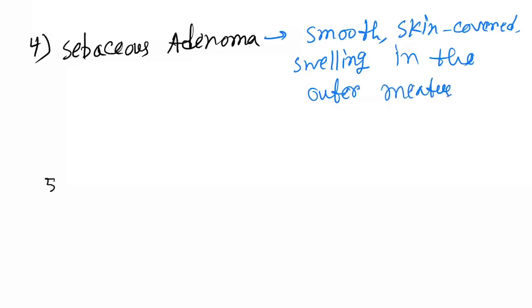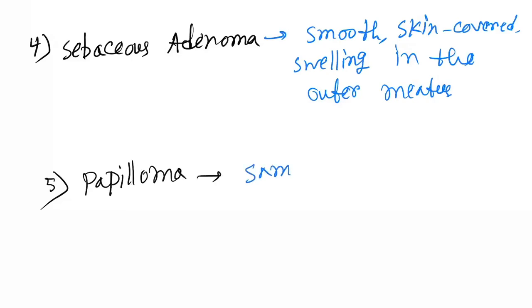The fifth benign tumor of the EAC is papilloma, which is the same as seen on the pinna.